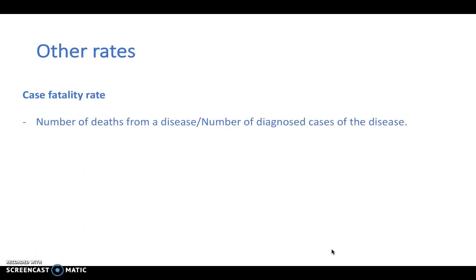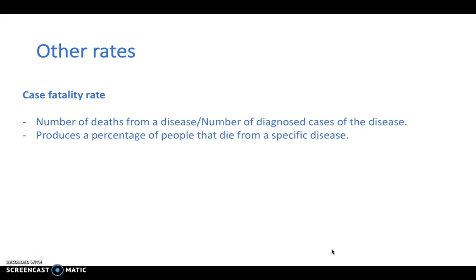One other rate to be aware of is the case fatality rate. This isn't particularly applied to births, but it's the number of deaths from a disease divided by the number of diagnosed cases of that disease. It produces a percentage of people that die from a specific disease, and it allows people to examine whether a disease is causing a lot of death once people are diagnosed with it, or whether it's not causing so much death.